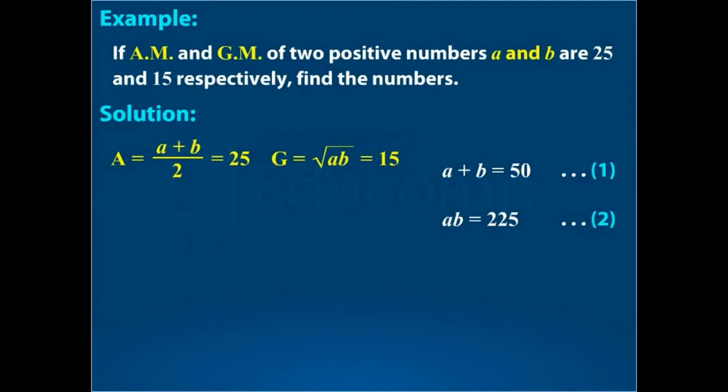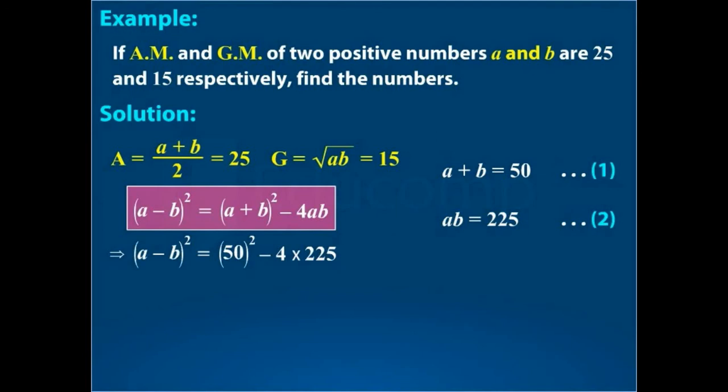Now substituting the values of A plus B and A into B from equations 1 and 2 in the identity A minus B whole square equal to A plus B whole square minus 4 into A into B, we get A minus B is equal to 40. Name it equation 3.